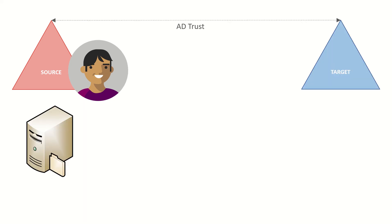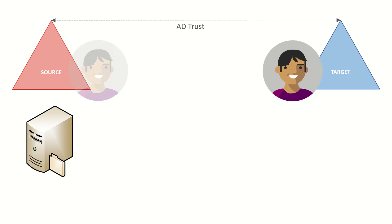ADMS focuses on migrating users and their workstations to a new forest. However, applications and other resources remain in the source domain, and there is at least some period of coexistence until those resources are also migrated. Some knowledge of SID history is key to understanding how users retain access to many, if not most, of their resources back in the source domain.